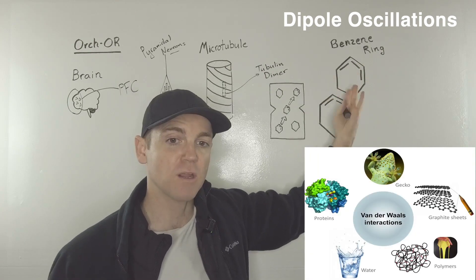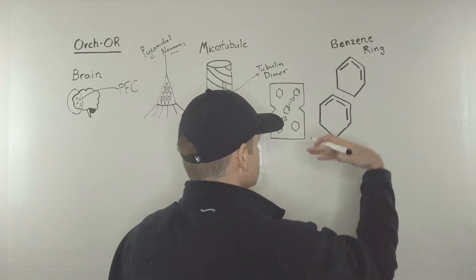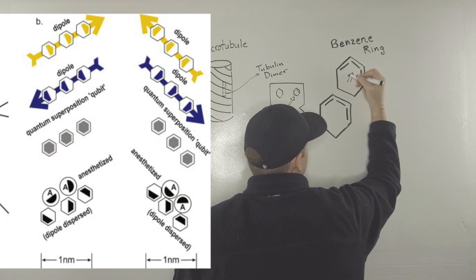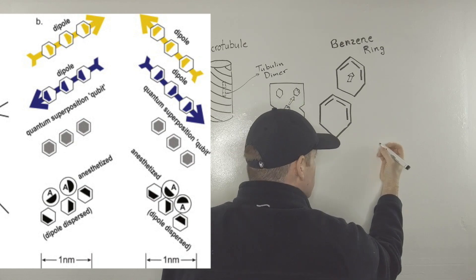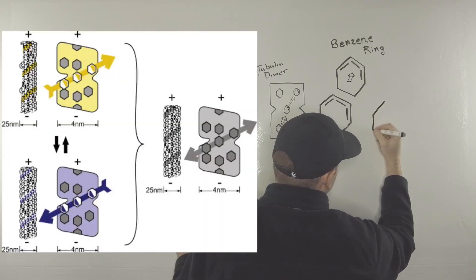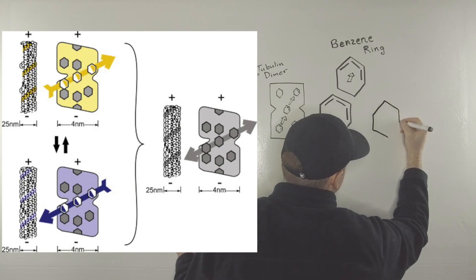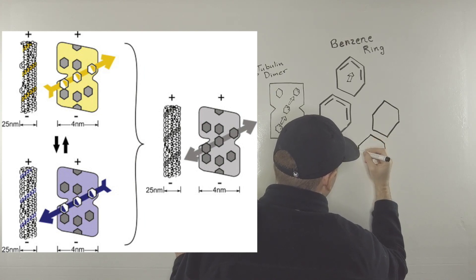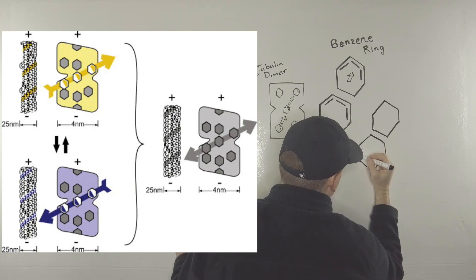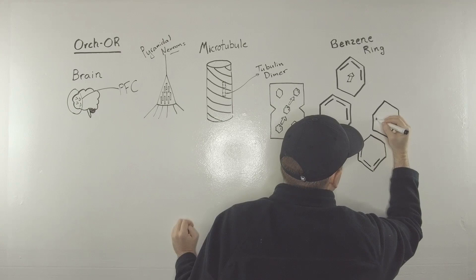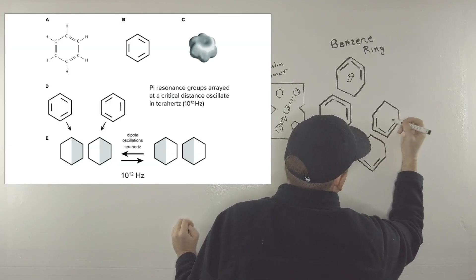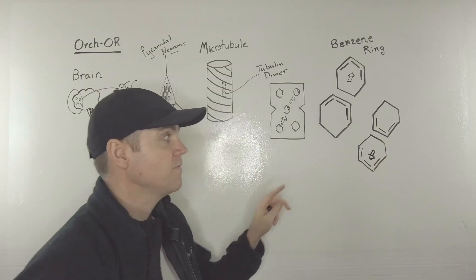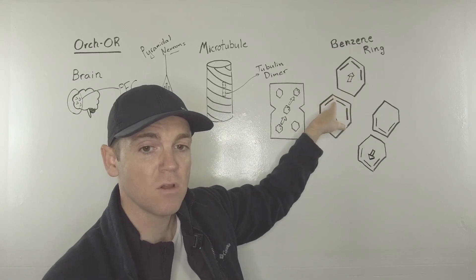Inside of the benzene ring, you have a flickering back and forth. Sometimes these benzene rings are oriented in this direction — you can see here, they're oriented in this direction. Or you can also have benzene rings oriented and switching orientation into the down position. You might have two hexagon representations of an aromatic benzene ring with the polarity on this side. So you either have this direction or a downward direction.